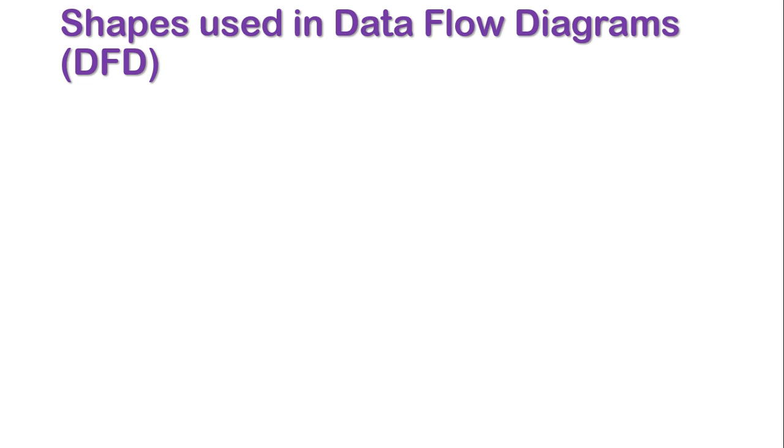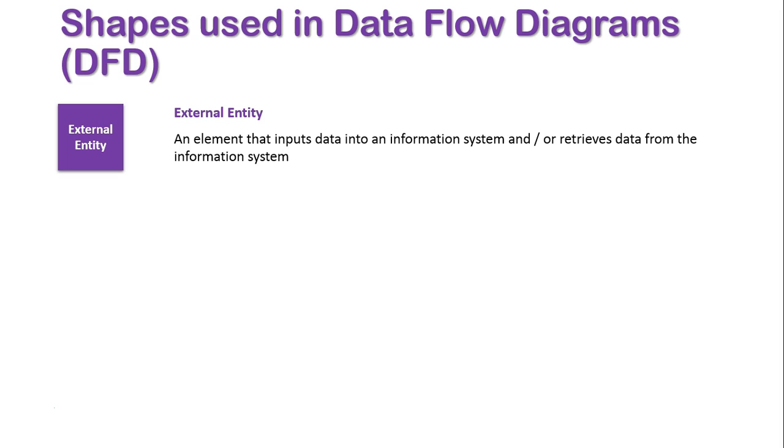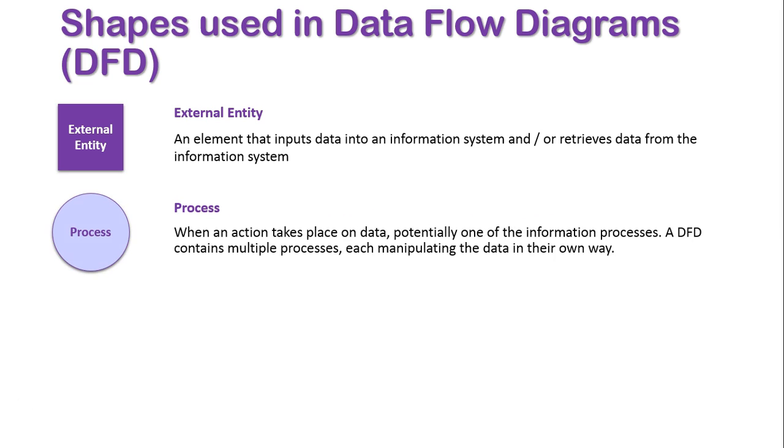Let's analyze all these shapes. We have our external entity, which is the person or user or something exterior to the system that is sending data to or retrieving data from the system. We have our process, and in this case we have multiple processes representing the different steps within the system. Unlike a context diagram, we have more than one circle in this scenario.